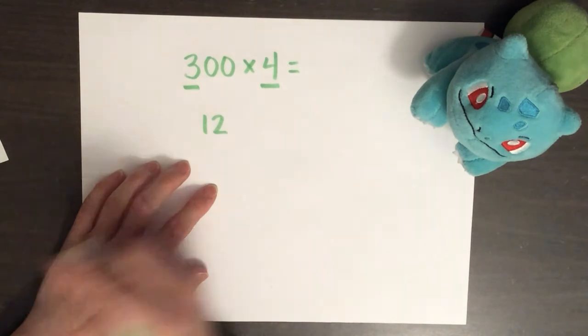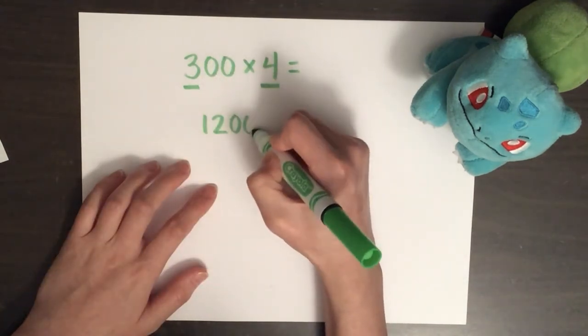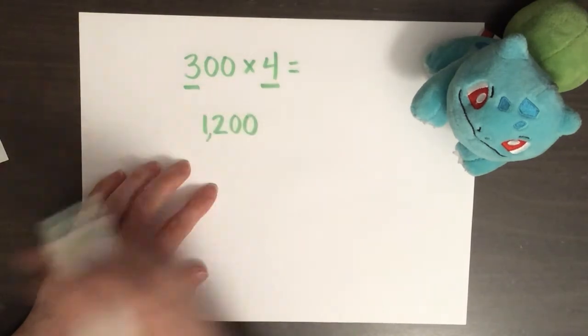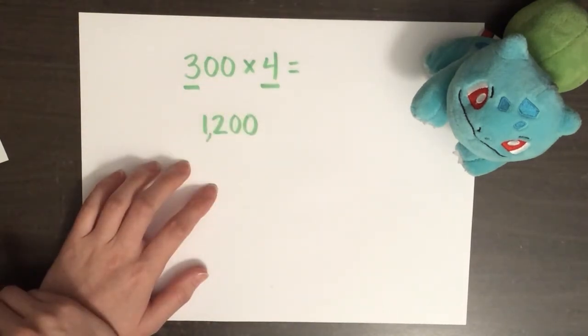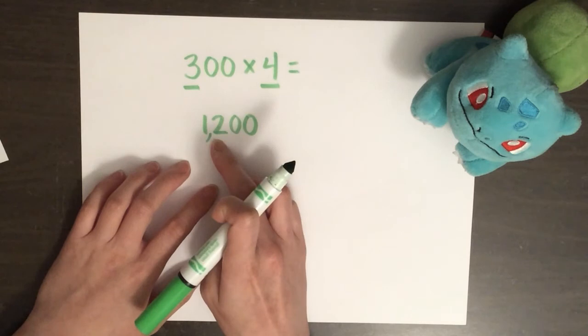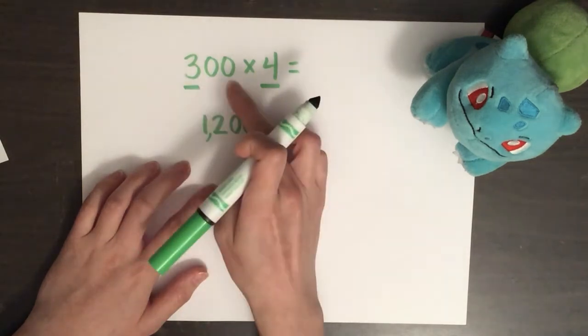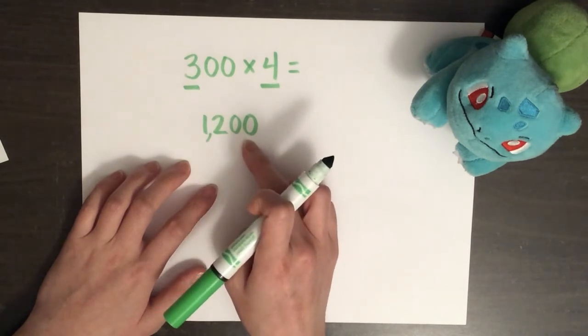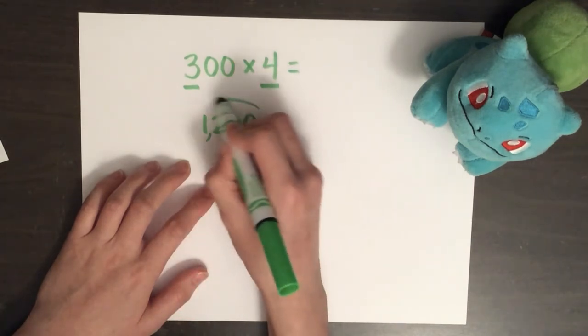Multiplication fact. So three times four is twelve. And then we added the amount of zeros. Then, of course, we added the one, two, three, comma. So, my answer was, if three times four is twelve, then three hundreds times four is twelve hundreds, or one thousand two hundred.